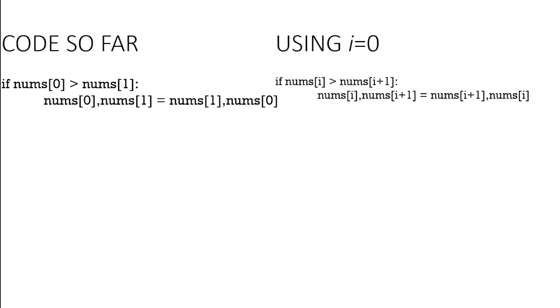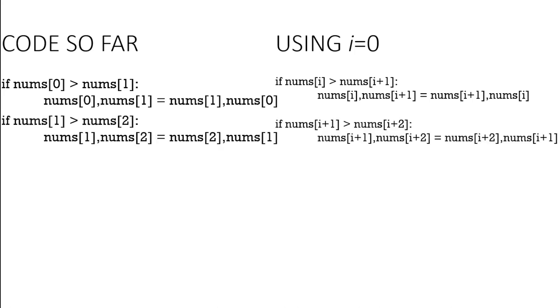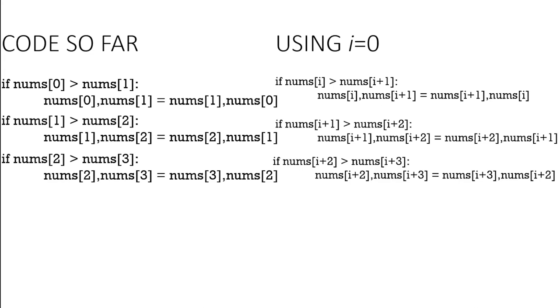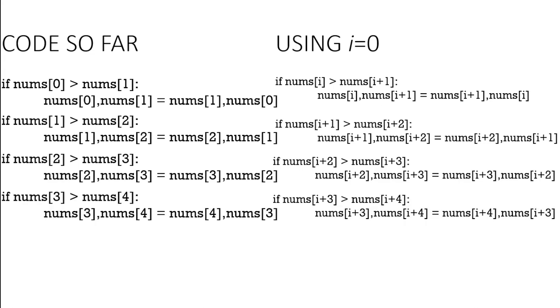You can see here when we compared the first two elements, we've got if nums[0] > nums[1] and then we swap zero and one around. Now if we was going to use a variable i rather than zero and one, we could call that i and i plus one. The next two elements that we compared were index one and two, so that would be i plus one and i plus two. We can look at each stage and change the number like three and four to i plus three and i plus four. So we can use a variable.